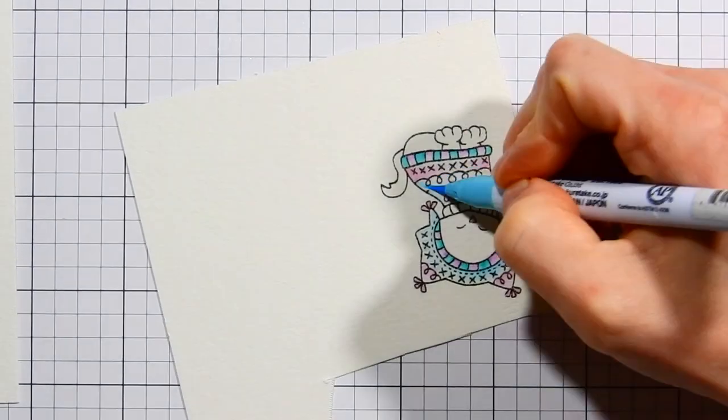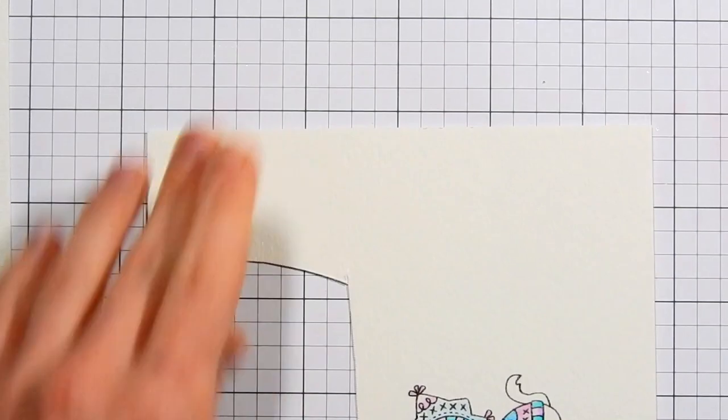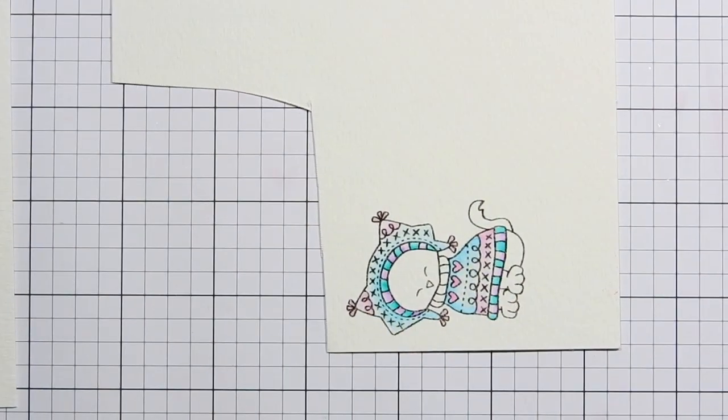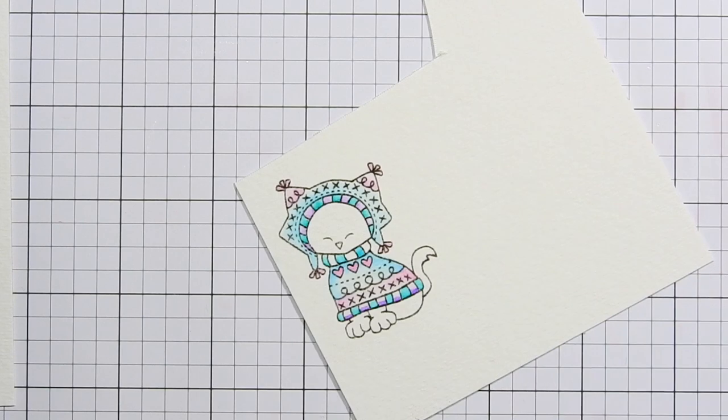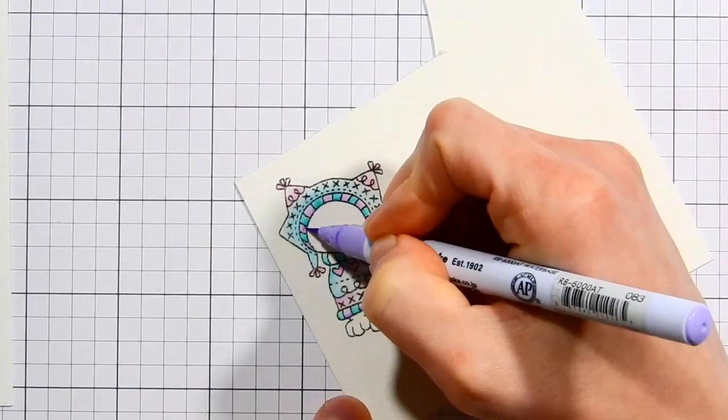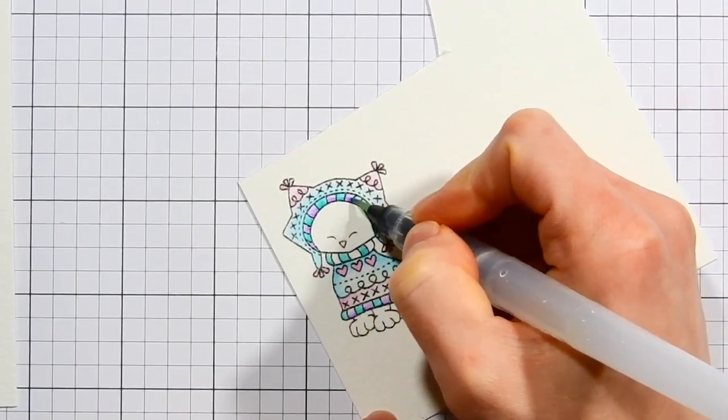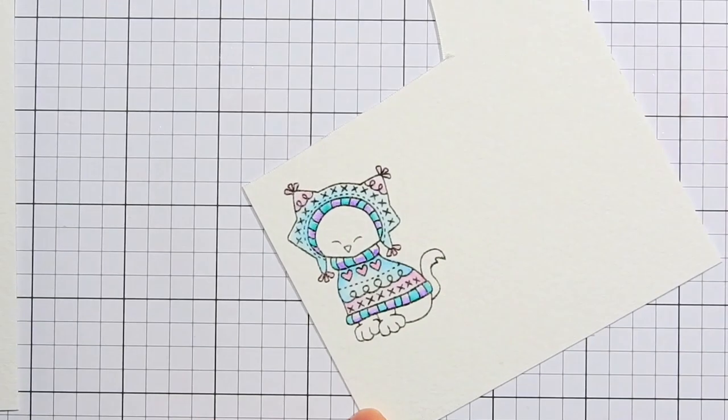So as I color these images, you'll notice I'm adding color from my Zig Clean Color markers along the areas where I want the color to be darkest and then I blend it out with my water brush. This is a really easy way to get the look of shading on your watercolor images using the Zig Clean Color markers.